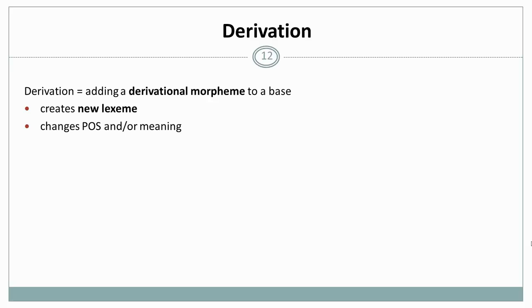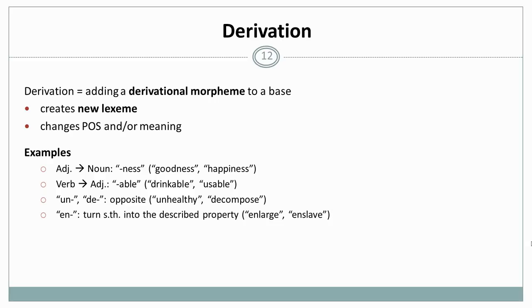Derivation in narrow sense is the adding of a derivational morpheme, affixes to a base. And this now creates a new lexeme in contrast to inflection. So it changes the part of speech and or the meaning. Here are a few examples. Ness changes an adjective to a noun. For example, good, goodness, happy, happiness.